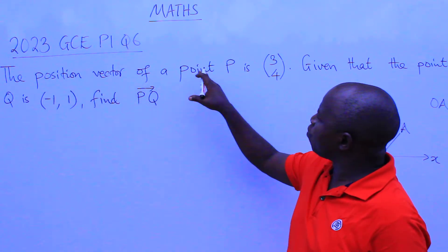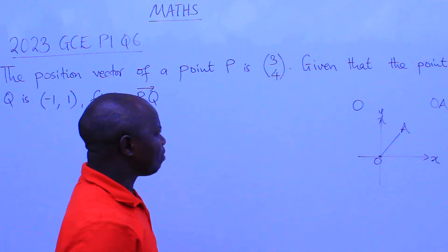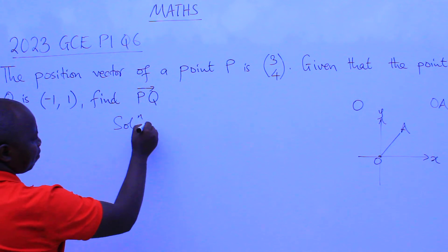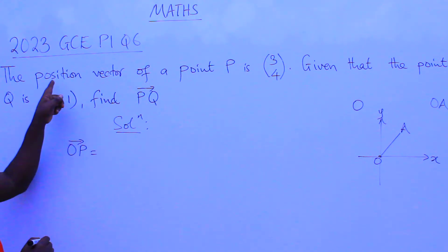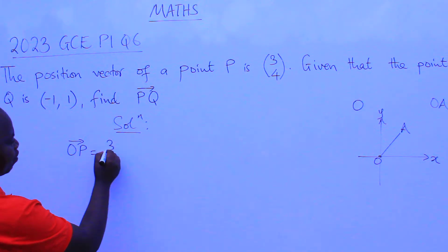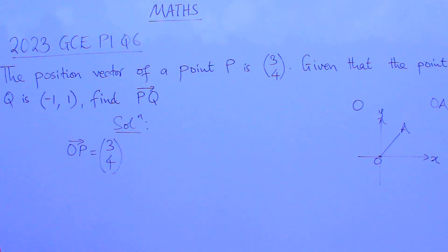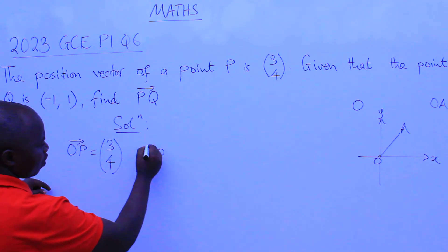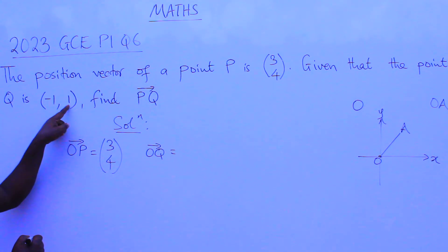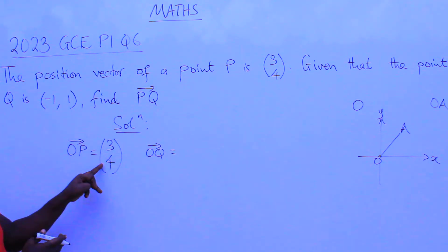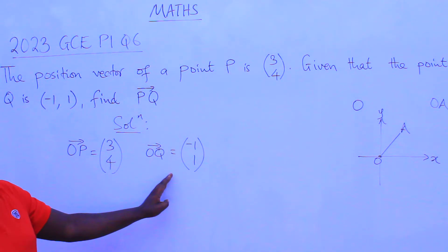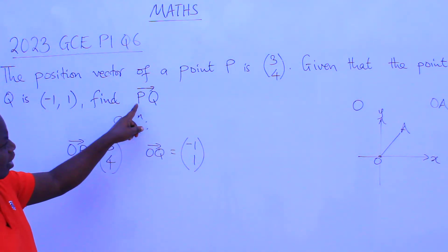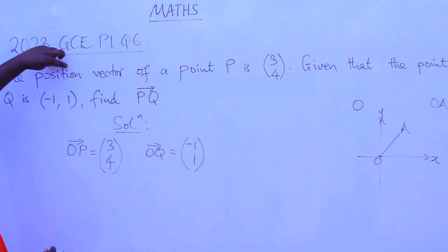Getting back to the question: the position vector of point P is the same as writing OP, because it is from the origin. So OP is equal to (3, 4). That is what you need to understand. Given that the point Q is also given, we have OQ equal to (-1, 1), which can be written in column form as (-1, 1).